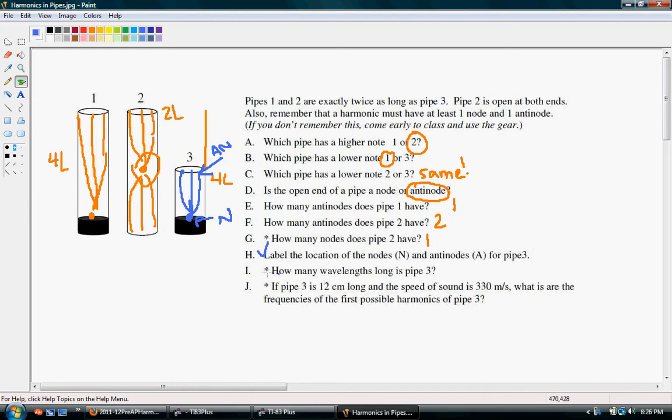How many wavelengths long is pipe 3? Well, since it takes four of these lengths, the pipe is actually a quarter of a wavelength.